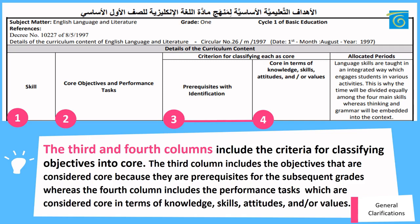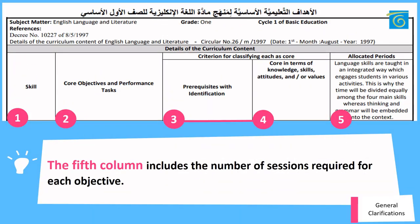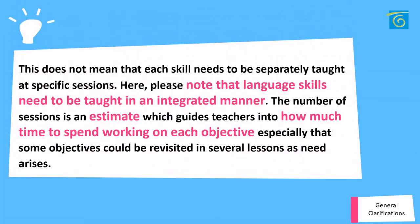The third and fourth columns include the criteria for classifying objectives into core. The third column includes objectives considered core because they are prerequisites for the subsequent grades, whereas the fourth column includes performance tasks considered core in terms of knowledge, skills, attitudes, and/or values. The fifth column includes the number of sessions required for each objective. This does not mean each skill needs to be separately taught; language skills need to be taught in an integrated manner. The number of sessions is an estimate which guides teachers on how much time to spend on each objective, especially since some objectives could be revisited in several lessons as need arises.